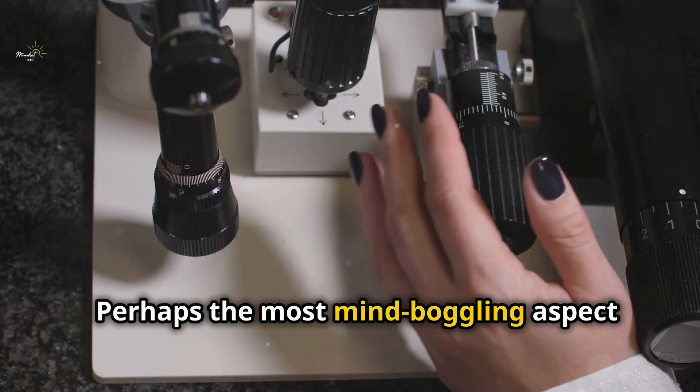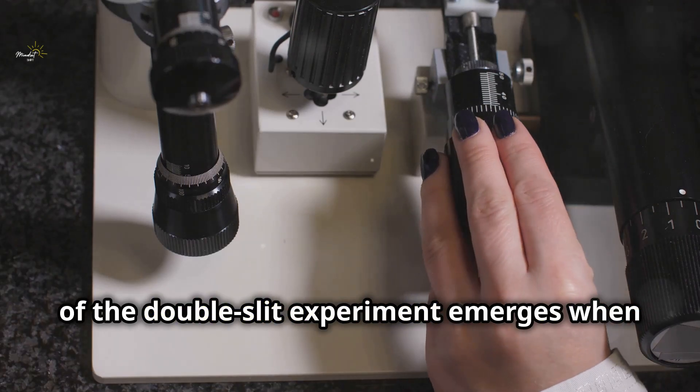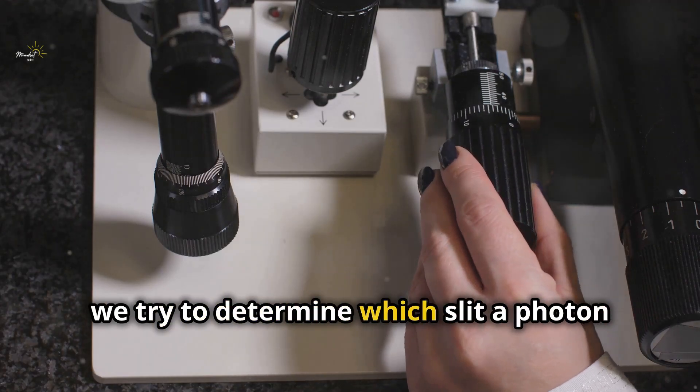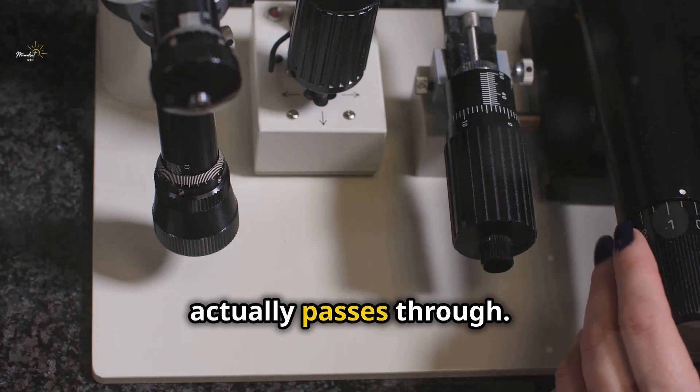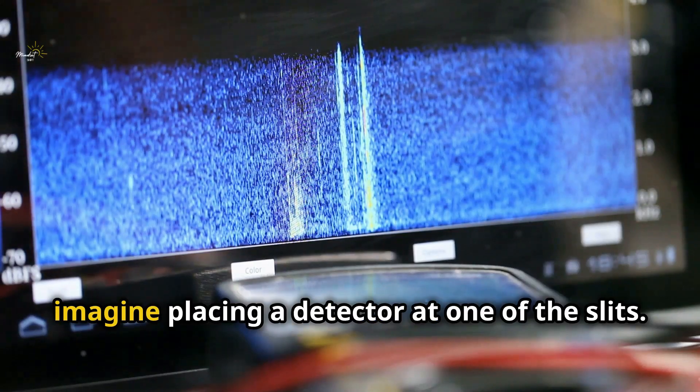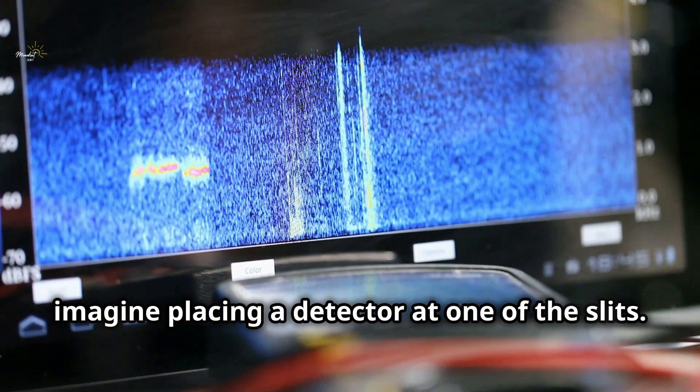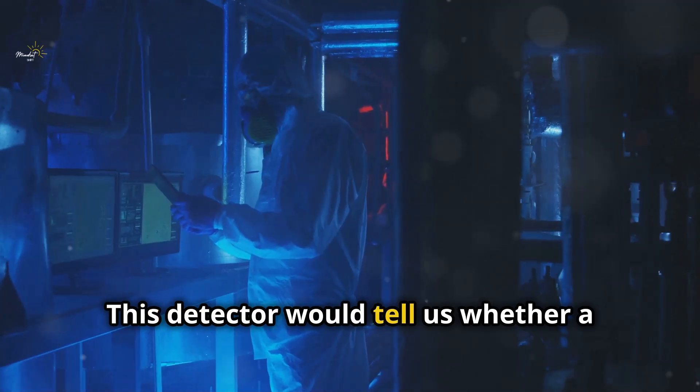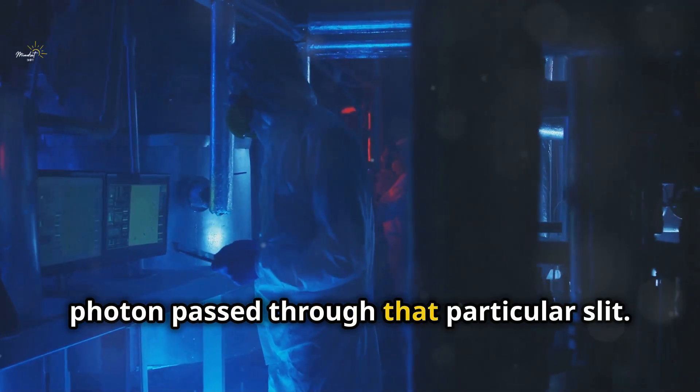Perhaps the most mind-boggling aspect of the double-slit experiment emerges when we try to determine which slit a photon actually passes through. To do this, imagine placing a detector at one of the slits. This detector would tell us whether a photon passed through that particular slit. Here's the kicker. The act of observing, of measuring which slit the photon goes through, destroys the interference pattern.